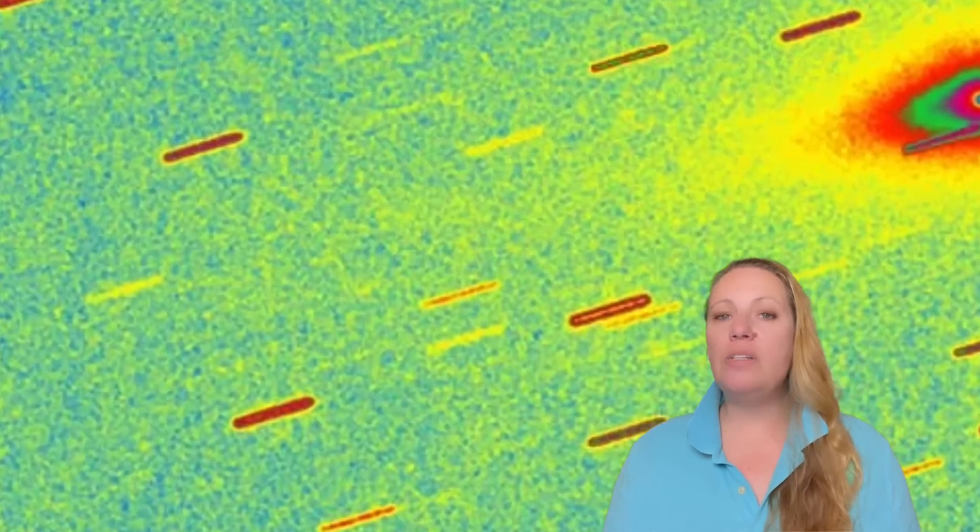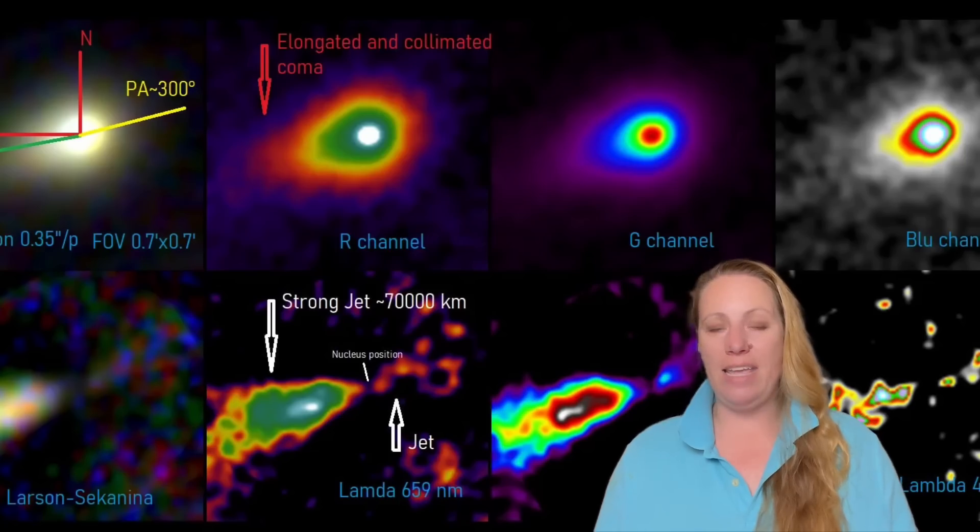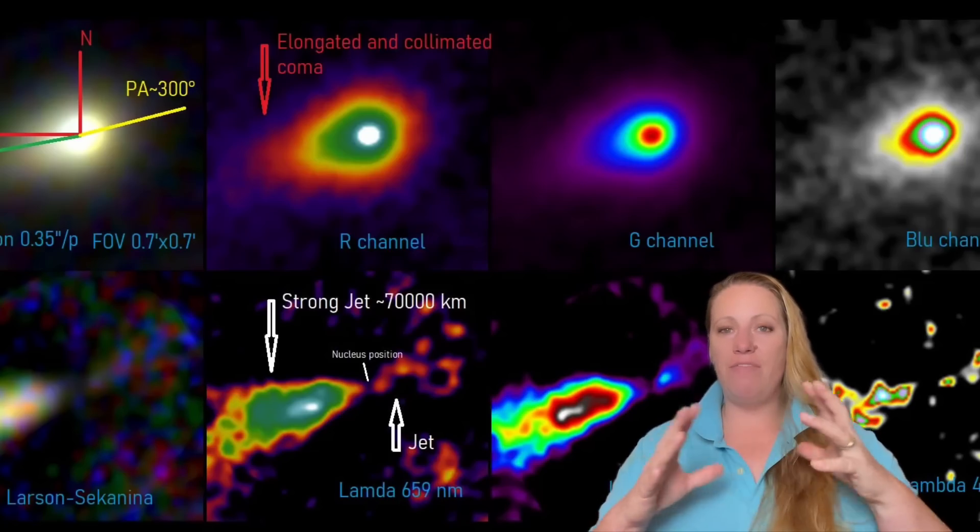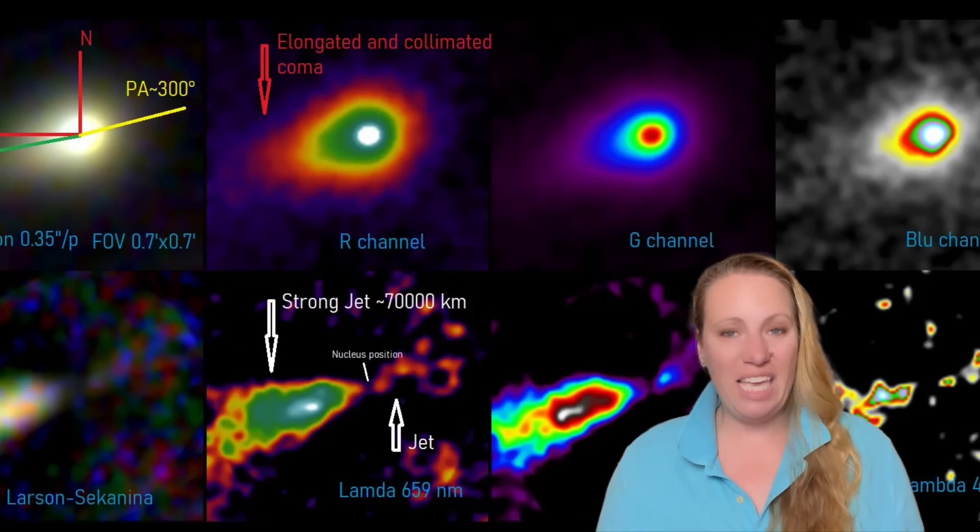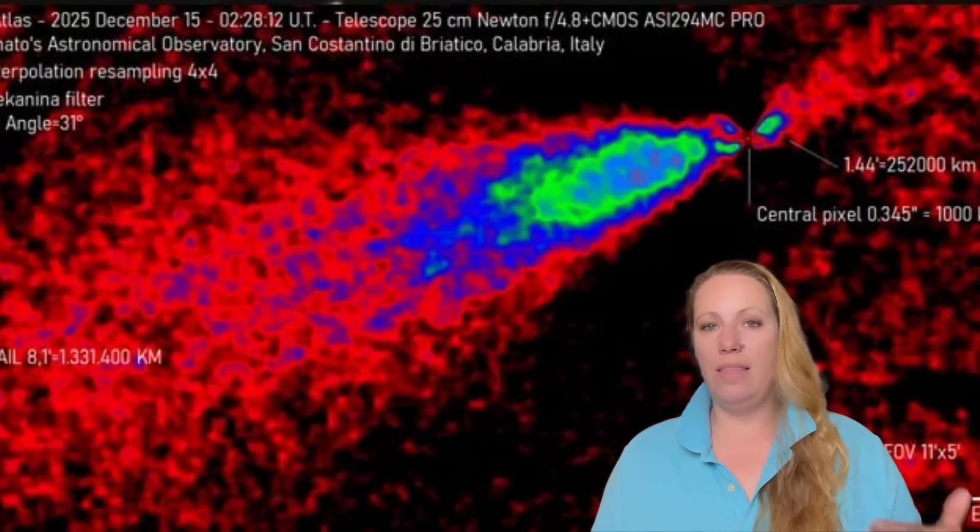And we cannot see the surface of 3I Atlas. I reported about this in one of my previous videos. It's hiding under a veil of dust. We can't see it. So this test needs to be done because it can get us closer to the real nature of 3I Atlas. Already, 3I Atlas is one of the most intriguing interstellar visitors that we have ever observed, and it's only the third one.